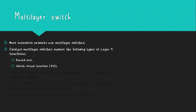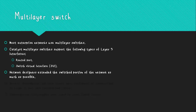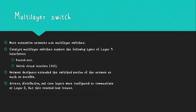Multilayer switching is used by most enterprise networks to achieve high packet processing rates using hardware-based switching. The Catalyst multilayer switches support the routed port, which is a pure Layer 3 interface, and the Switch Virtual Interface (SVI), which are virtual layer interfaces for inter-VLAN routing. Network designers extended the switch portion of the network as much as possible because switches operated at hardware speeds, which were faster than routers using software speeds. Access, distribution, and core layers were configured to communicate at Layer 2, but this created loop issues.